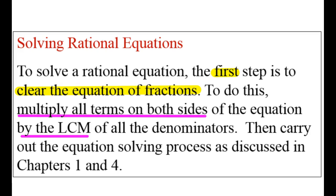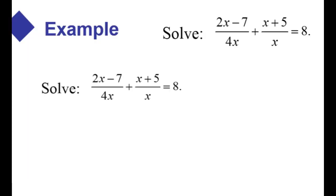What I'm going to show you how to do is clear the fractions, which most students don't like anyway, so the first step should always be to get rid of the fractions. You can do that by multiplying all the terms on both sides by the common denominator, otherwise known as the least common multiple. Our first example has a common denominator of 4x.